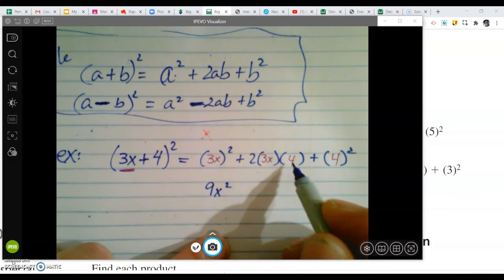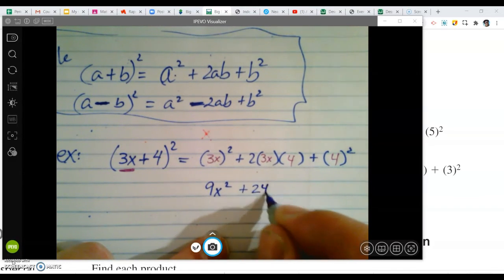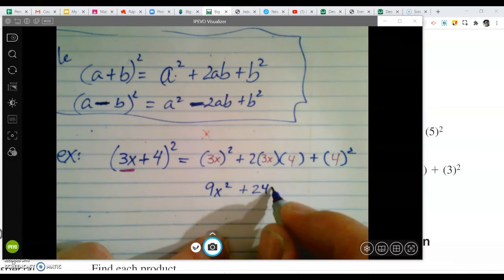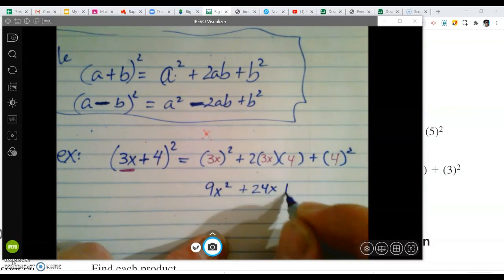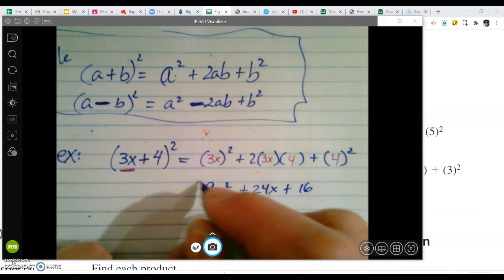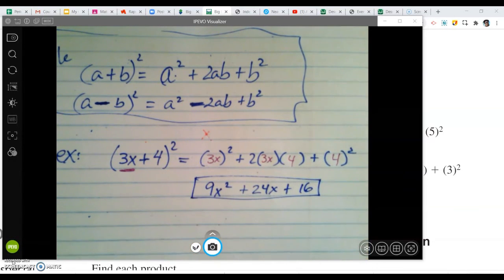2 times 3 is 6. Times 4 is 24. And we're allowed to do that because multiplication, you can do 4 times 3 is 12, times 2. It's still going to be 24. And over here, the 16. And the 4 squared. And that's it.